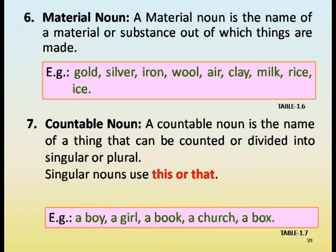Material noun is the name of a material or substance out of which things are made. Examples: gold, silver, iron, wool, air, clay, milk, rice, ice.